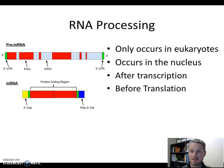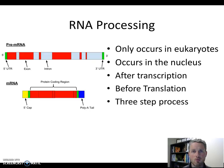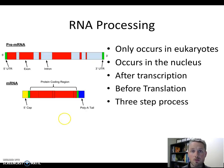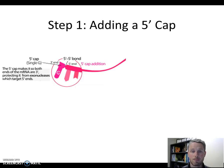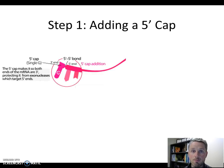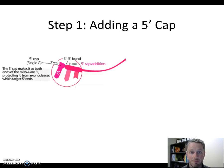As mentioned, this is a three-step process. We're going to look at three chemical modifications that are made to the RNA. Step one is the addition of the 5' cap.